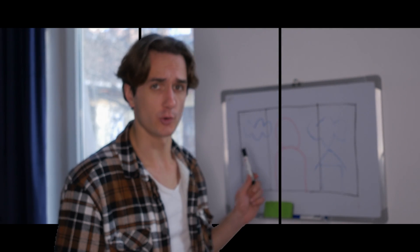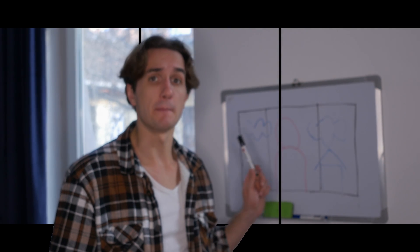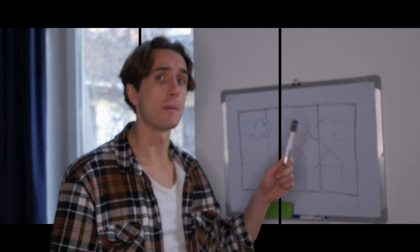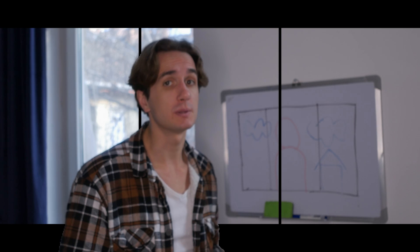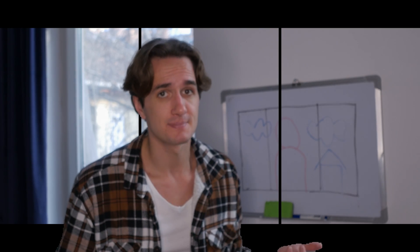The way Any 3D's 2D to 3D conversion works is by separating the foreground, the middle ground, and the background with black lines. This creates the illusion of 3D.